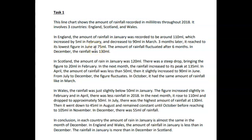This line chart shows the amount of rainfall recorded in milliliters throughout 2018. It involves three countries: England, Scotland, and Wales. In England, the amount of rainfall in January was recorded to be around 110 ml, which increased by 5 ml in February and decreased to 90 in March. Three months later, it reached its lowest figure. In June at 75, the amount of rainfall fluctuated for six months. In December, the rainfall was 130 ml.